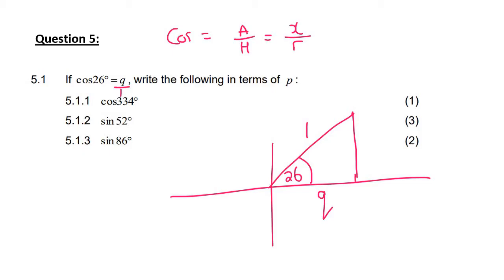By now we all know how to do this. We're going to use Pythagoras, and you're going to find this side as square root of 1 minus q squared. Now that we've done that, we can go answer the questions.